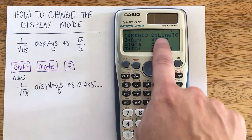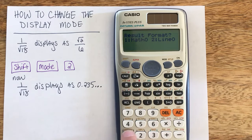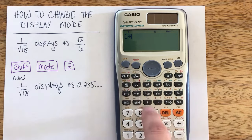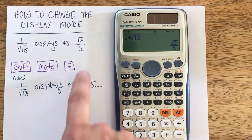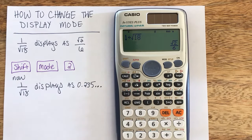shift and mode, but instead of option 2, you would choose option 1, and then choose 1 again, and now when I hit 1 divided by the square root of 18, I get the simplified rationalized denominator format. Alright. Thank you.